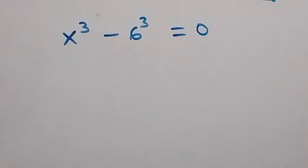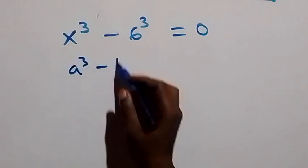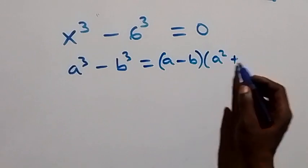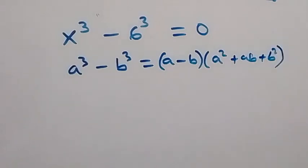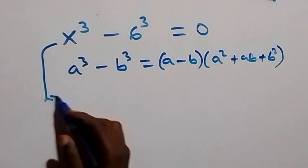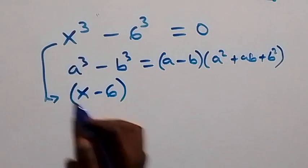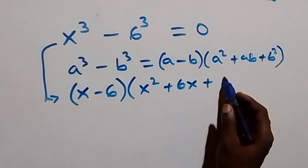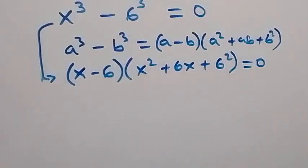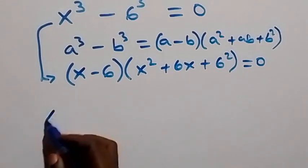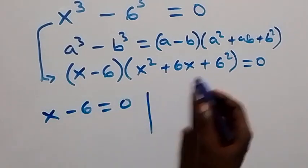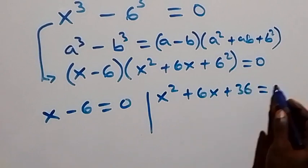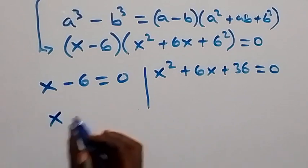For the second case, x³ - 6³ equals 0. This follows from the difference of cubes formula: a³ - b³ equals (a - b)(a² + ab + b²). So we get (x - 6)(x² + 6x + 36) equals 0. This gives us x - 6 equals 0, implying x equals 6, or x² + 6x + 36 equals 0.